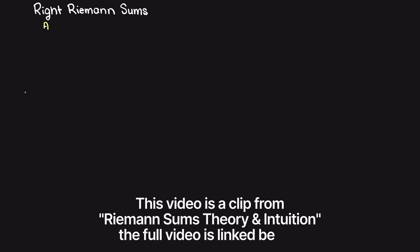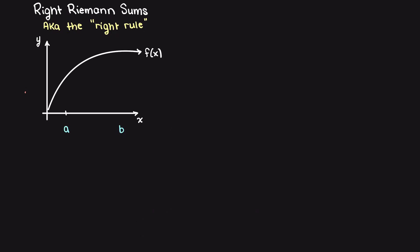Let's talk about the right Riemann sum, also known as the right rule. Here the area of each rectangle will be found in a similar way by multiplying our base, which is our step size, times our function's output when using the right side of the rectangle's x value as an input.